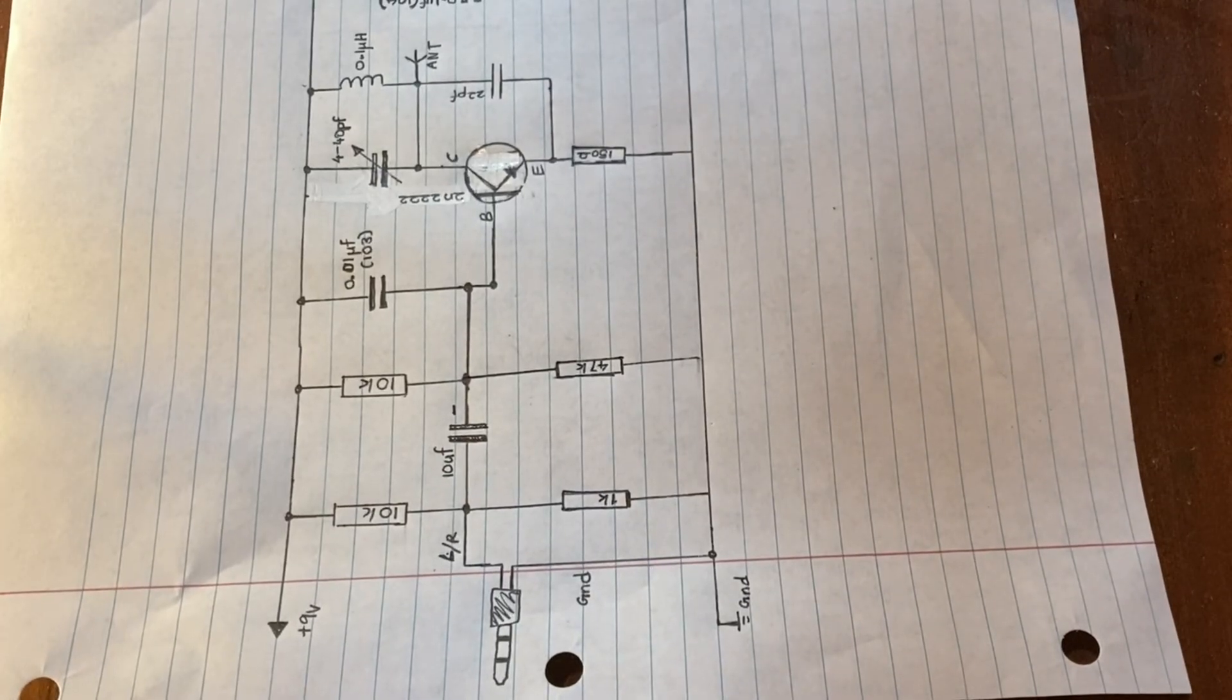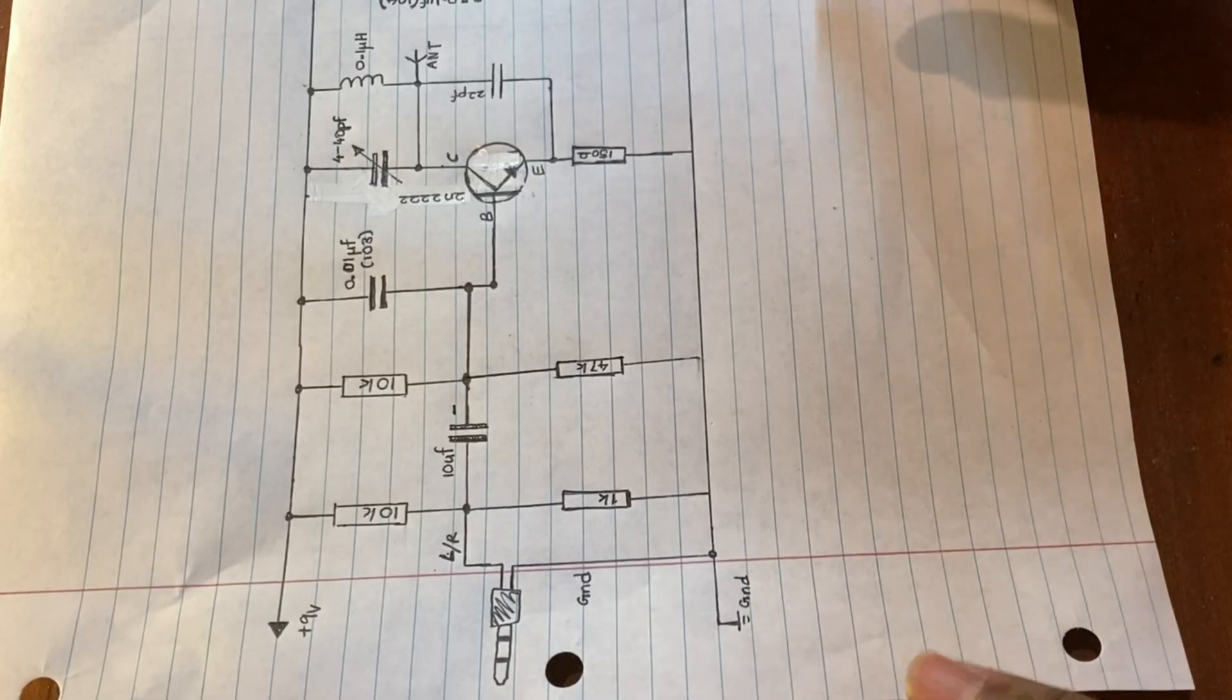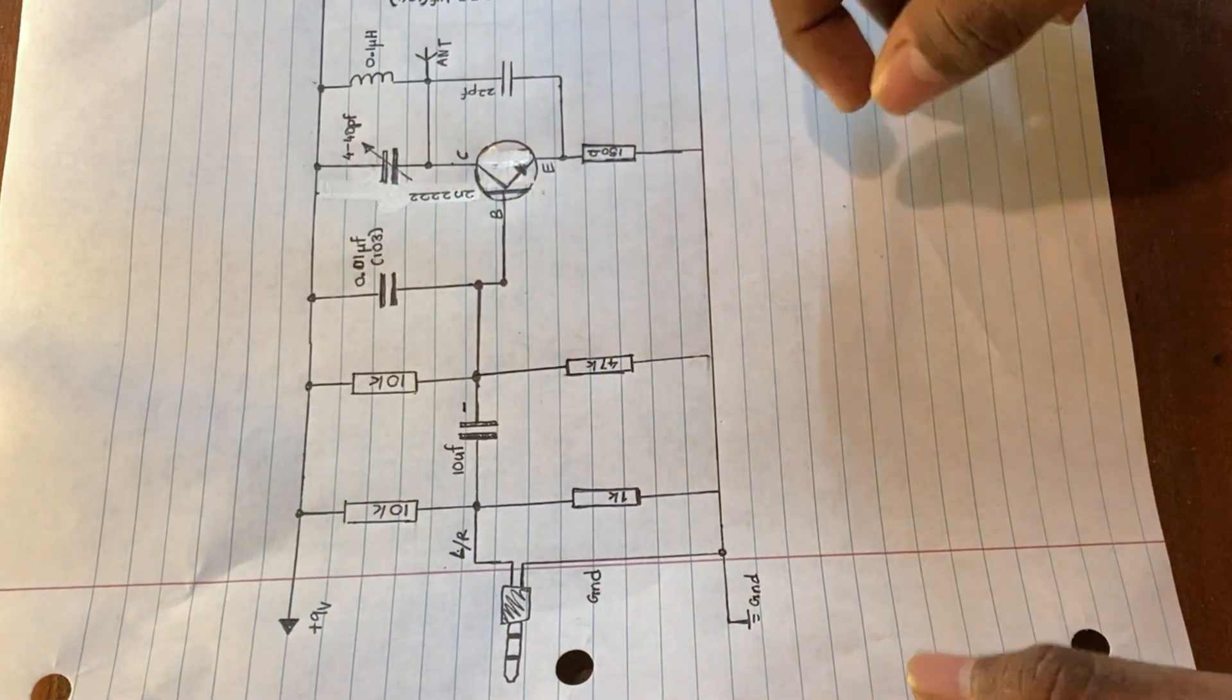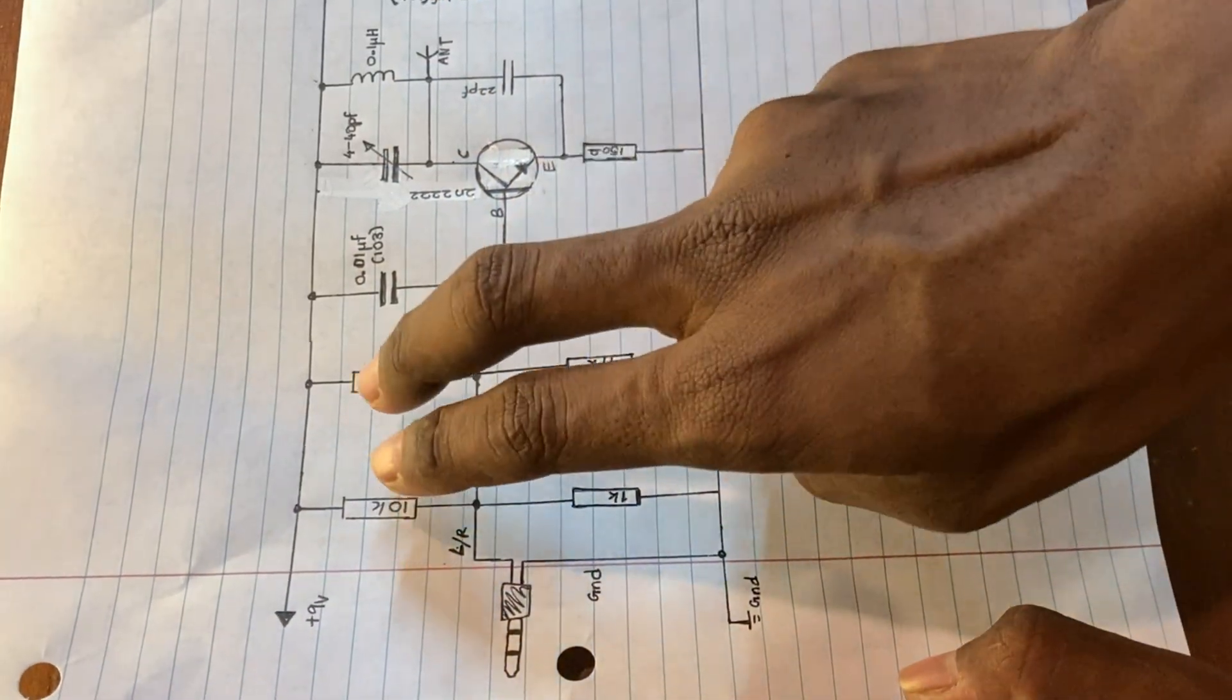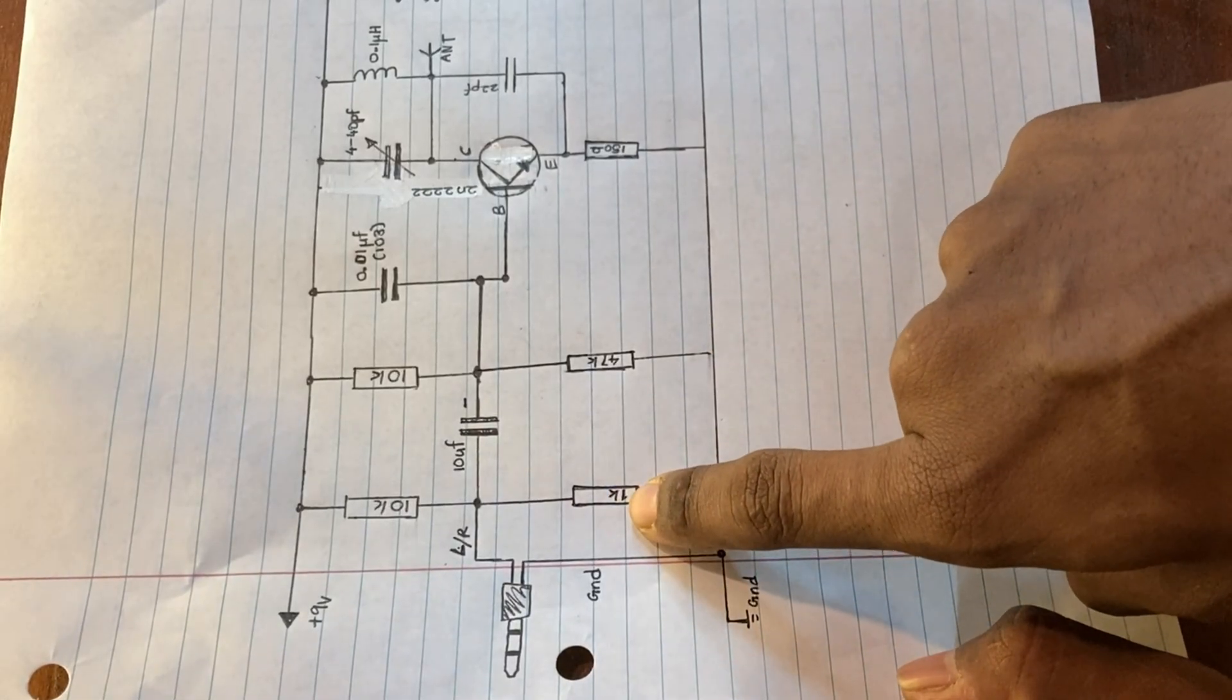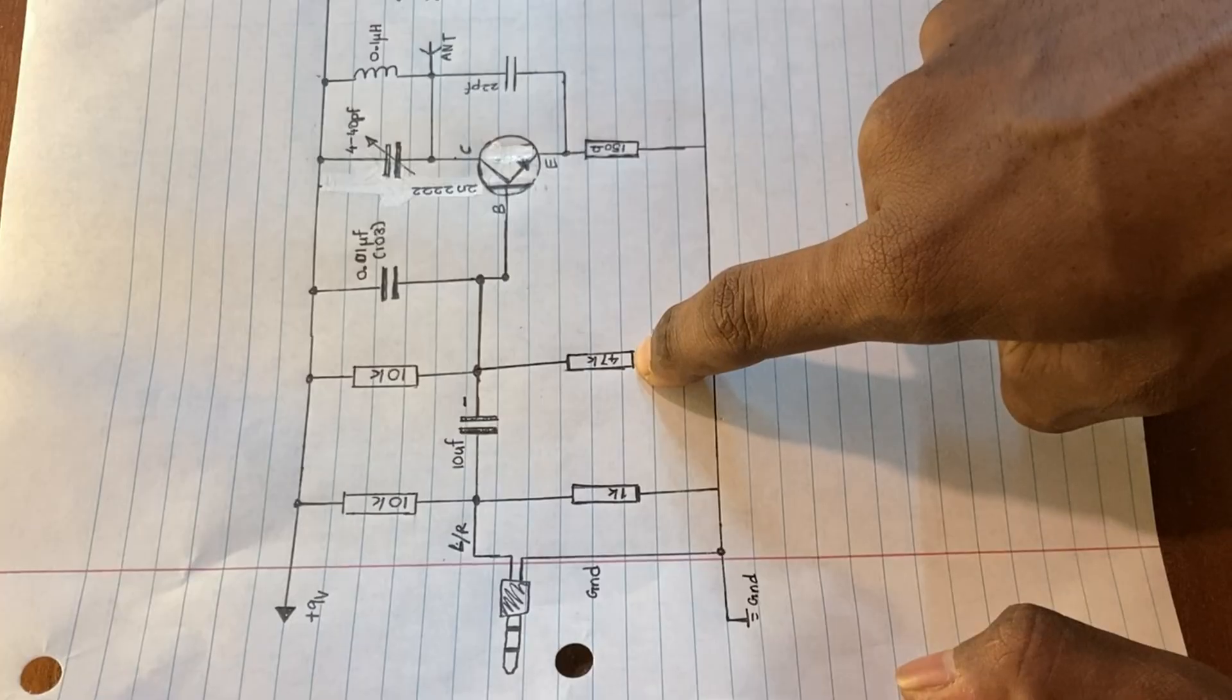What's up guys, welcome back to the channel. Today we are going to make a simple FM transmitter. So this is the circuit diagram. You will need two 10 kilohm resistors, 1k resistor, and 47 kilohm resistor.